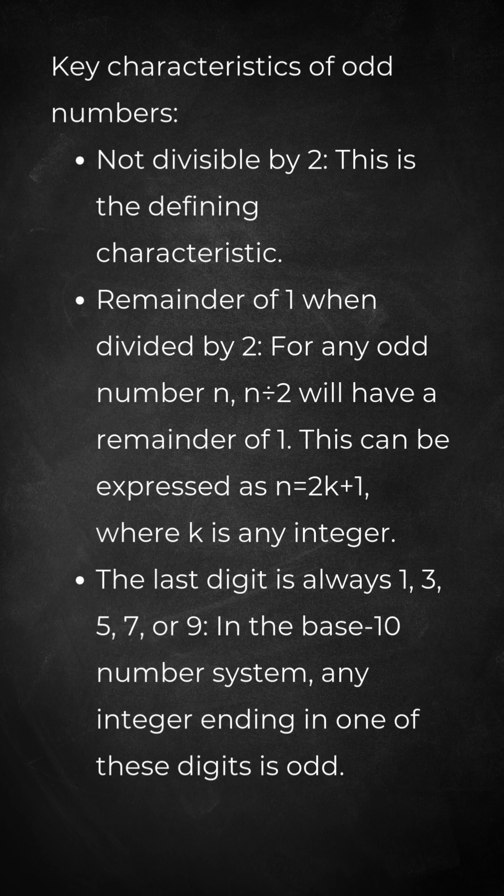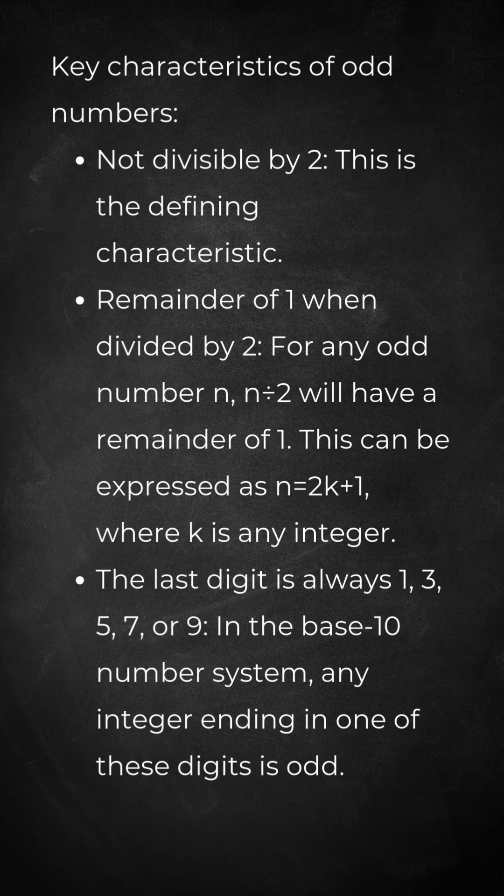The last digit is always 1, 3, 5, 7, or 9. In the base 10 number system, any integer ending in one of these digits is odd.